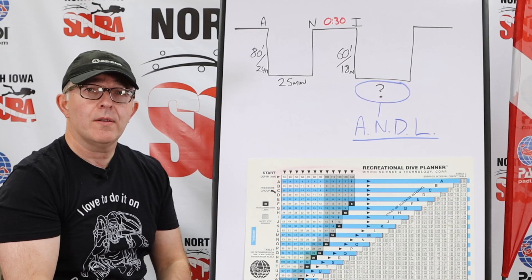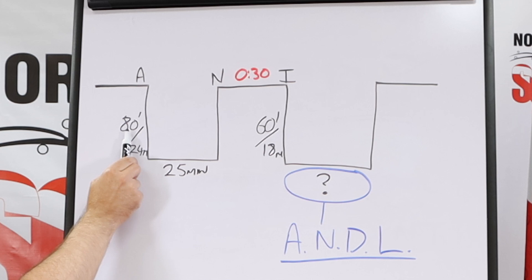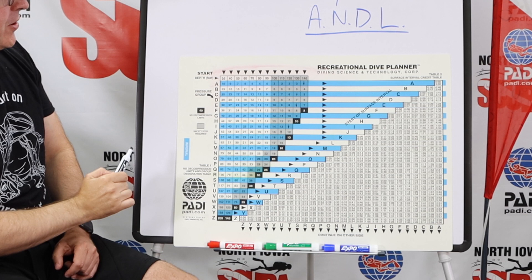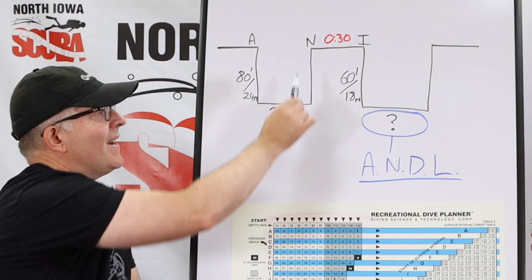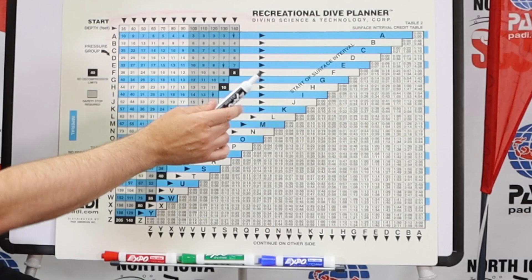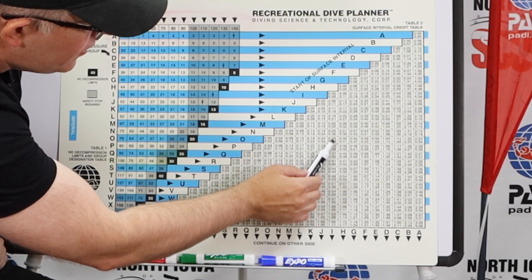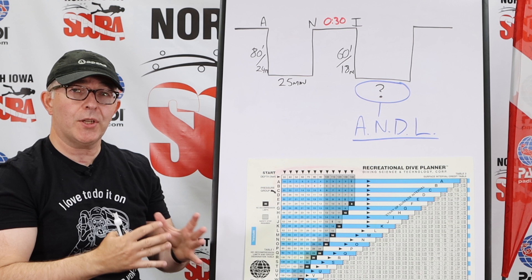This is an example of a question you might be asked during your open water examinations. We have two divers who make their first dive to 80 feet or 24 meters for 25 minutes. When we do the calculation on the RDP, we find 80 feet, go down and find 25 minutes, and they come out of the water as an N diver — pressure group N. They're going to take a 30-minute surface interval. We find the N diver, come across, find 30 minutes, come down, and we're now an I diver. We breathed off some of that gas and changed our pressure group.